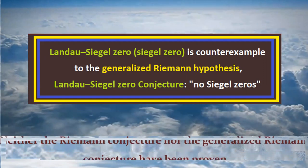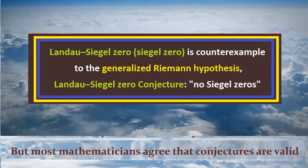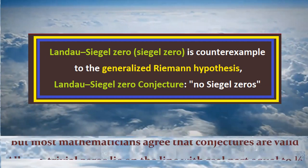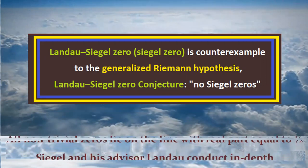Neither the Riemann conjecture nor the generalized Riemann conjecture have been proven. But most mathematicians agree that conjectures are valid, i.e. all non-trivial zeros lie on the line with real part equal to one-half.